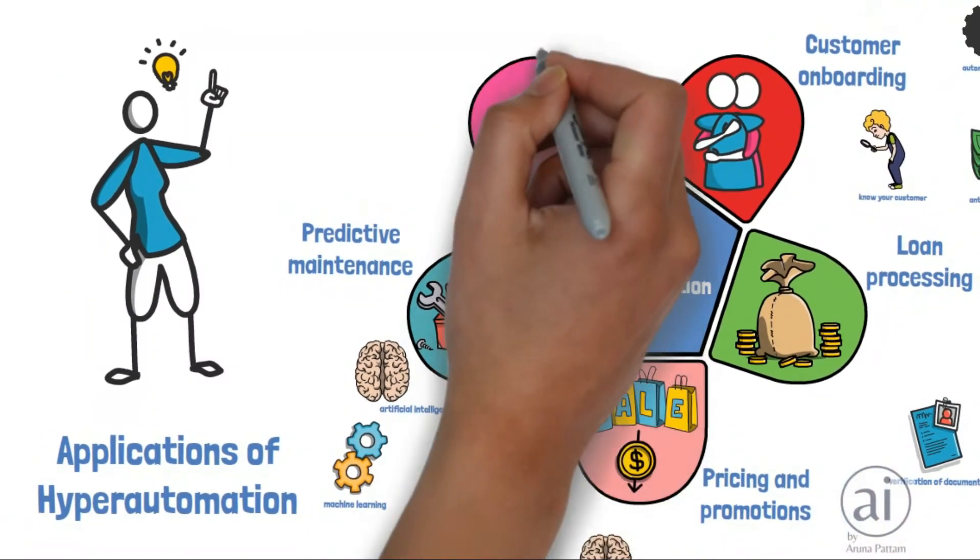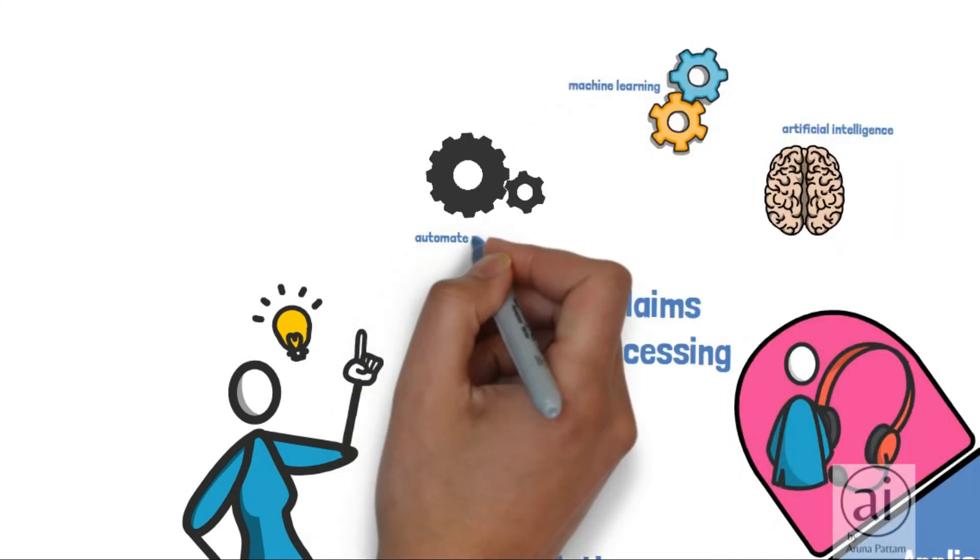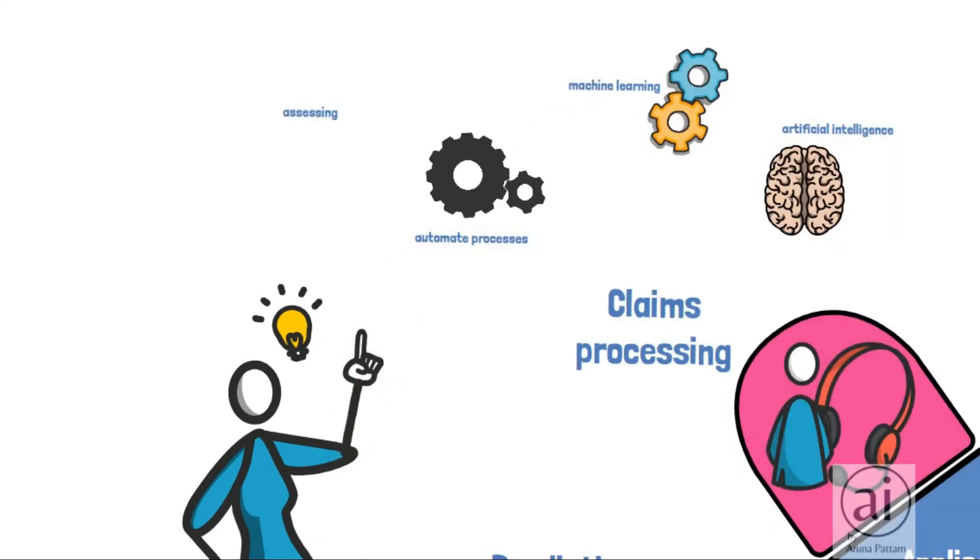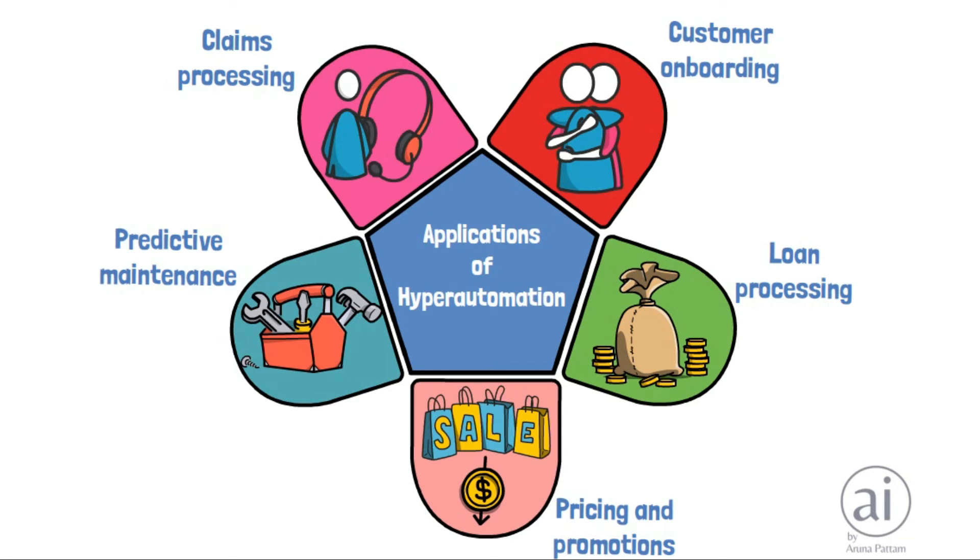Claims processing. AI and ML techniques can be used to automate the process of assessing, verifying and processing medical insurance claims. As hyper-automation technologies continue to evolve, we can expect to see even more amazing applications of hyper-automation in the future.